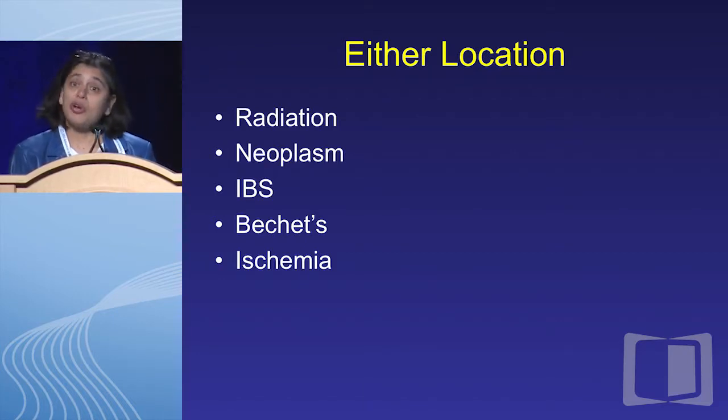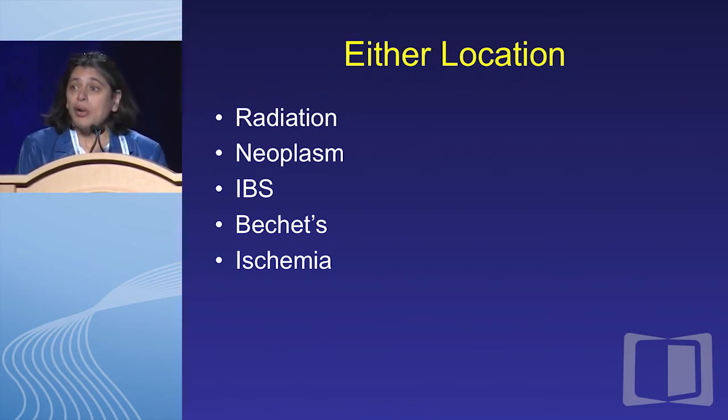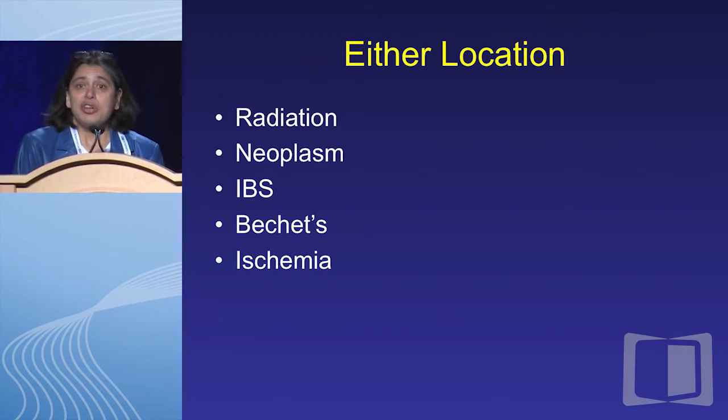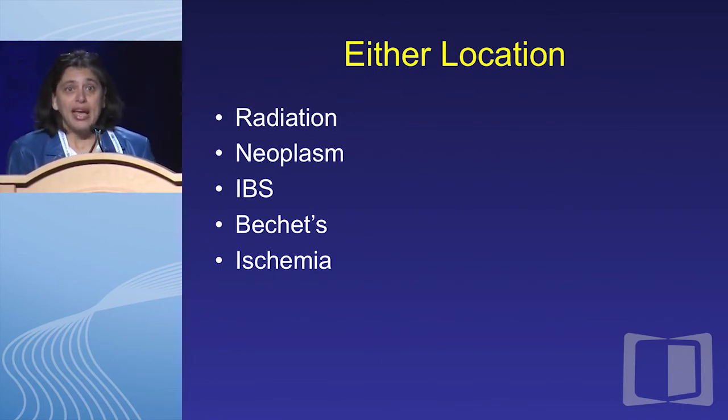What can occur in either location — small bowel or colon — includes radiation change. Radiation enteritis or colitis can appear 25 years later, so the patient who had a Wilms tumor at age three and is now 30 presenting with small bowel obstruction requires asking about childhood cancer treatment. Also consider neoplasm, irritable bowel syndrome, Behcet's — which can be in either small bowel or large bowel — and ischemia can be in either place.